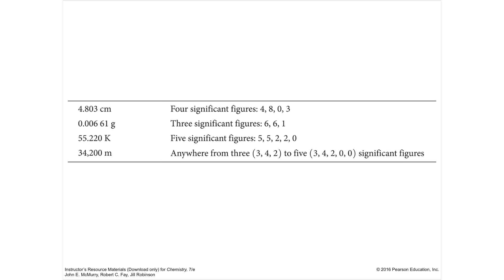If I had 34,200 meters, these last two zeros — since I don't have a decimal — are insignificant. They're just placeholders showing you that it's in the thousands, not the hundreds. So there would be three significant digits here. If you add a decimal point after that zero, then it would be five significant figures.